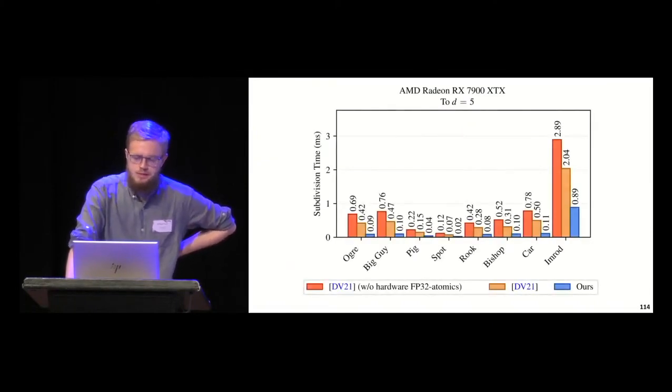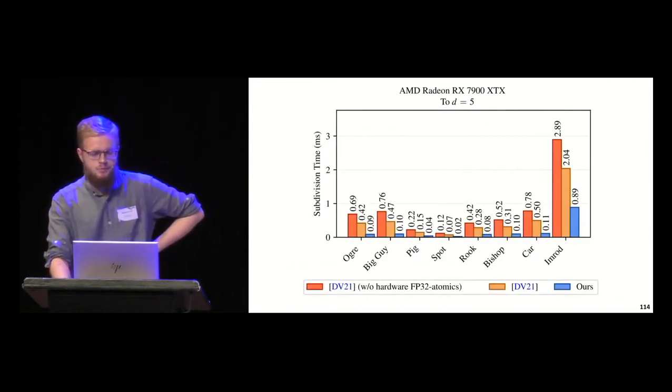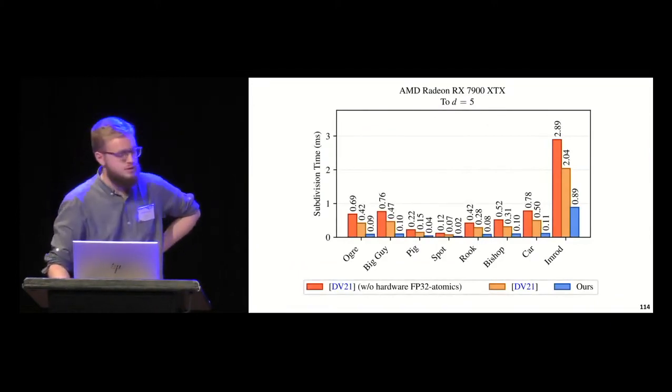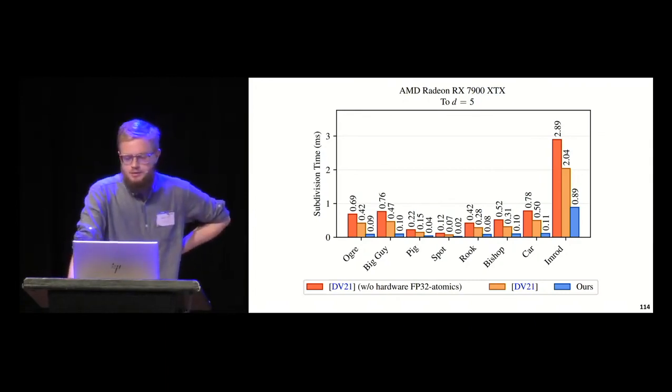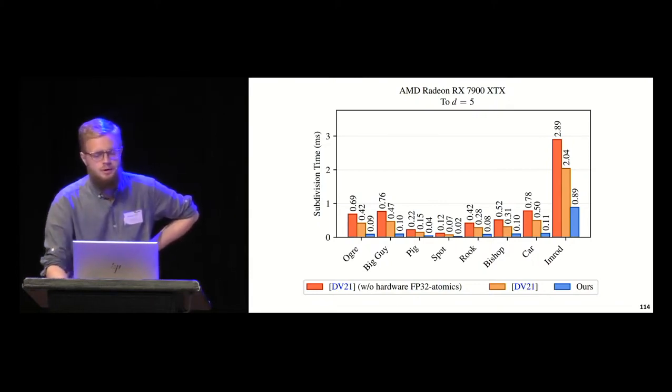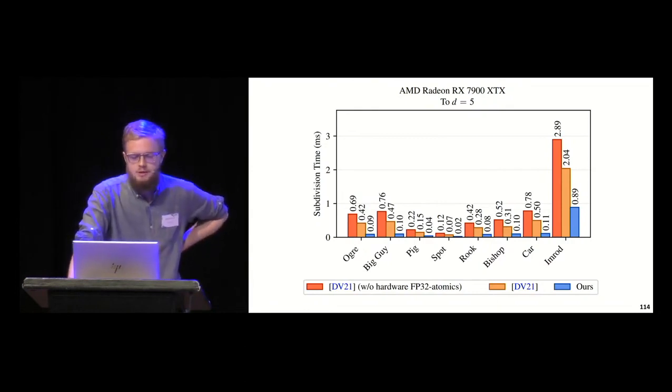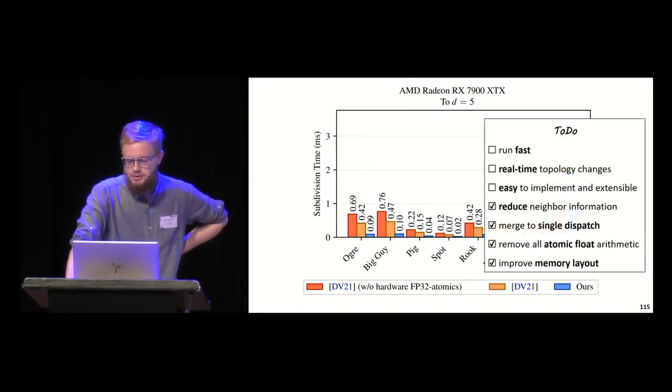Let's talk about results. Here are subdivision timings for five iterations, so we multiply the number of faces by a thousand approximately. Our technique is in blue. The previous technique, half-edge refinement, is in orange. The red bars are half-edge refinement where we had to simulate floating point arithmetic for hardware or APIs that don't support it. As you can see, we are approximately three times faster than previous technique. We wanted to run fast - we're about three times faster.